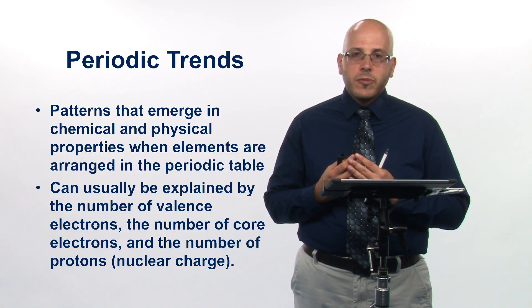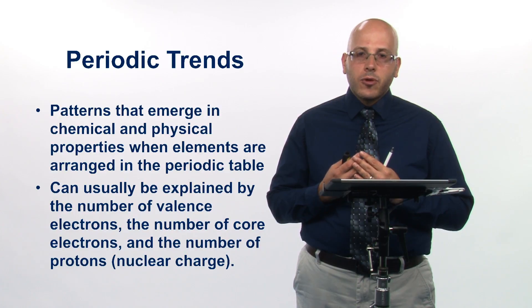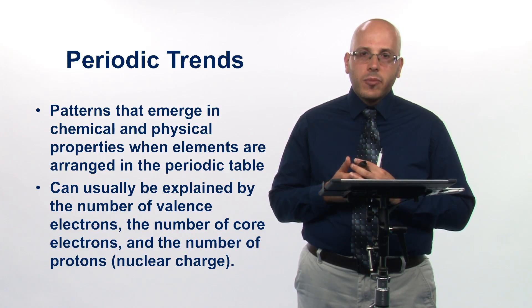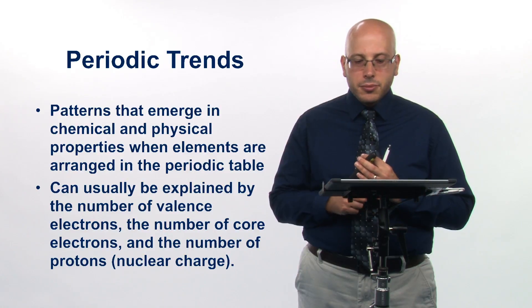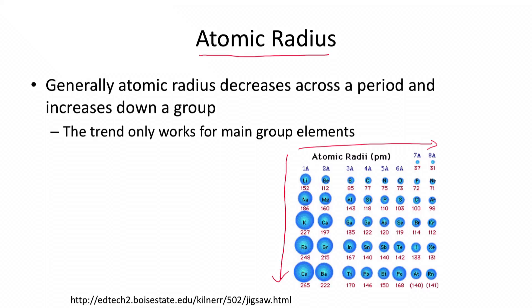Let me show you some specific examples of different periodic trends. First, let's talk about atomic radius. Atomic radius generally decreases across a period and generally increases down a group. You can see the trend here — as you go left to right, these atoms tend to get smaller, and as you go top to bottom within the same group, they get bigger.